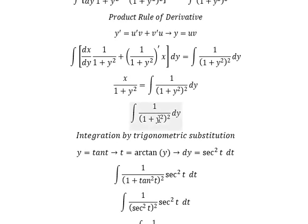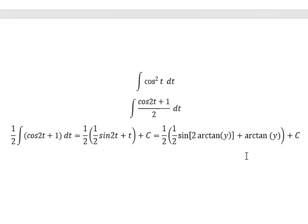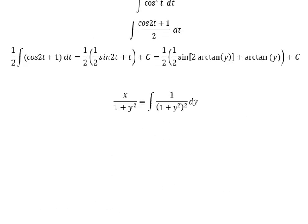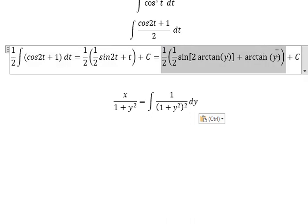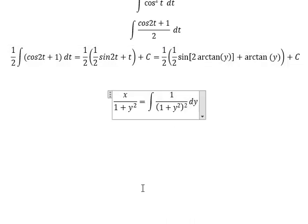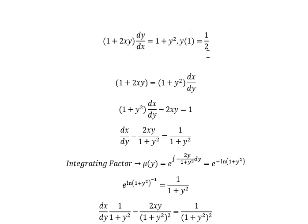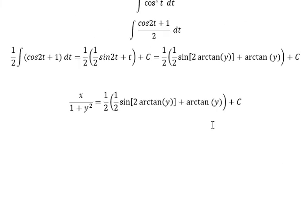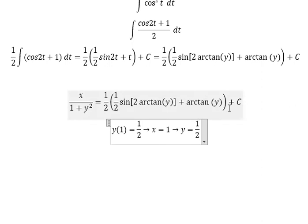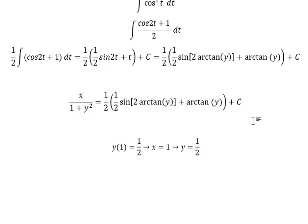Now we return back to this one. So I need to put this one in here. And now we have the condition: when x equals number one, y equals one over two. So we put number one and one over two in here.